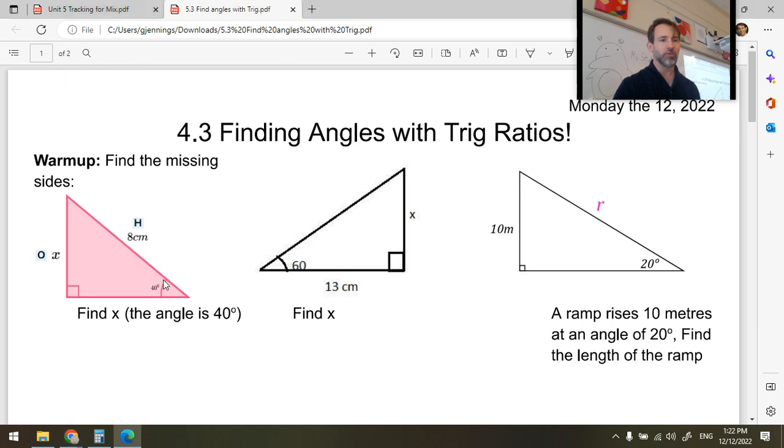In this question, this angle is 40 degrees, and we're looking to find this unknown side here. This is the hypotenuse. It's been labeled for us. And this is the opposite side.